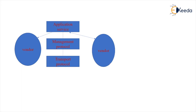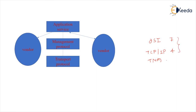To observe what layers provide successful communication establishment, the answer is transport protocol, management protocol, and application services. We are familiar with three types of model architectures for communication: OSI, TCP/IP, and TNM. OSI contains seven layers, TCP/IP contains four layers, and TNM has its own basic layer architecture which tries to overcome the drawbacks of both OSI and TCP/IP.